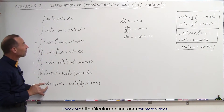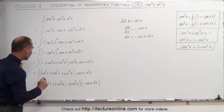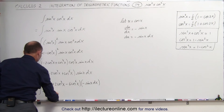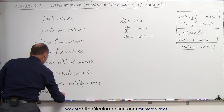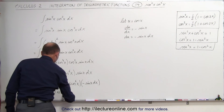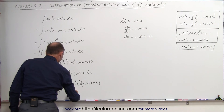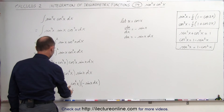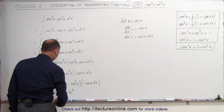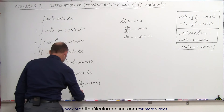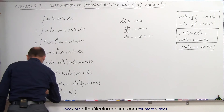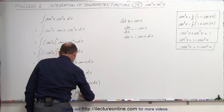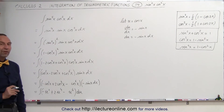In each of these terms, the cosine of x can be replaced by u, so this whole thing can be written as the integral of negative u squared plus 2 times u to the fourth minus u to the sixth, and then multiplied times du. This is now fairly straightforward to integrate.